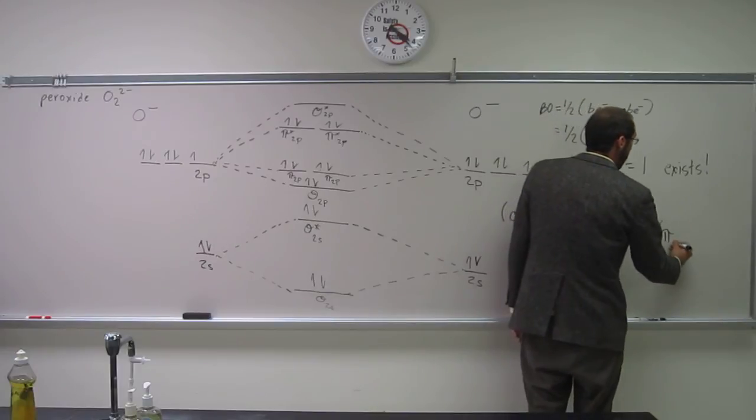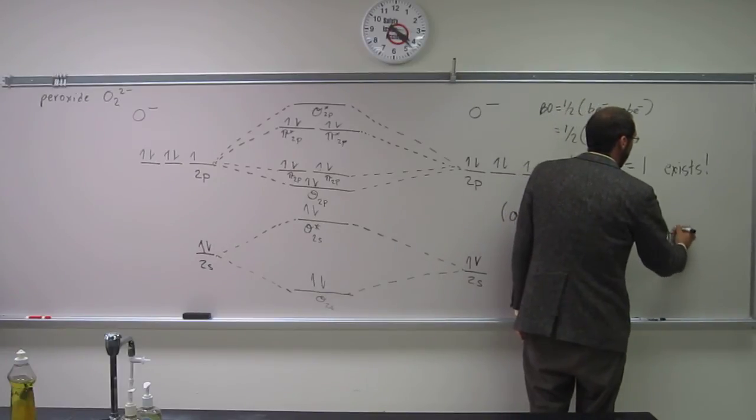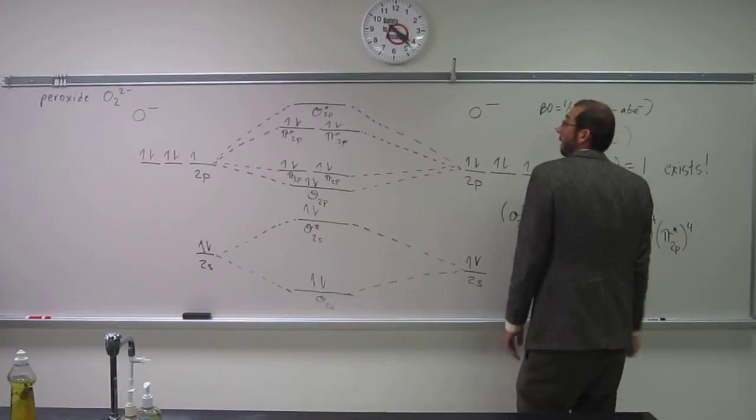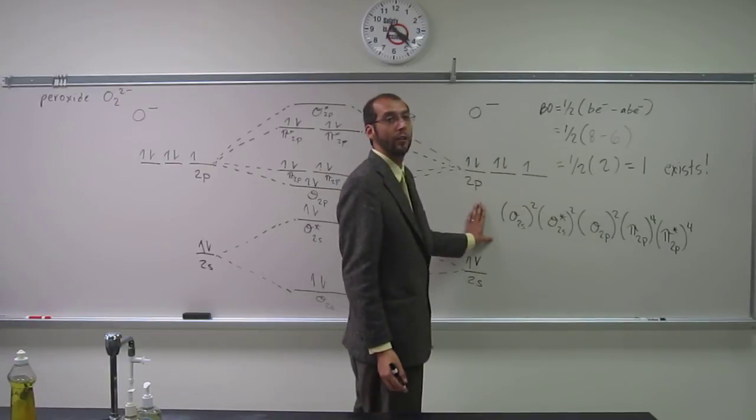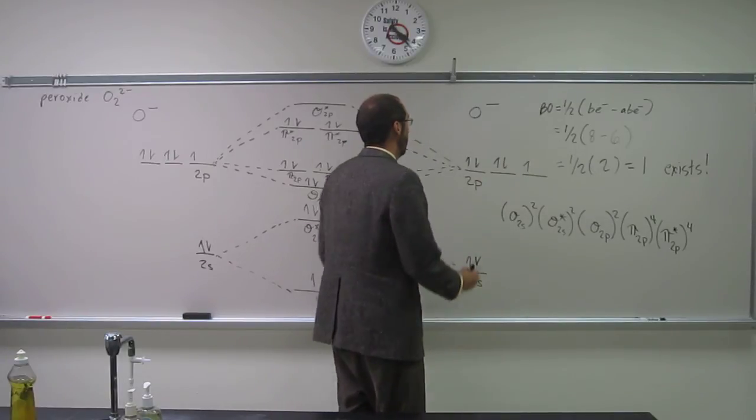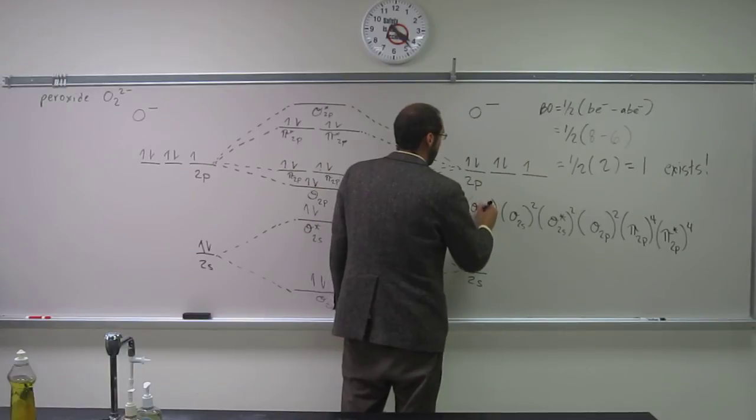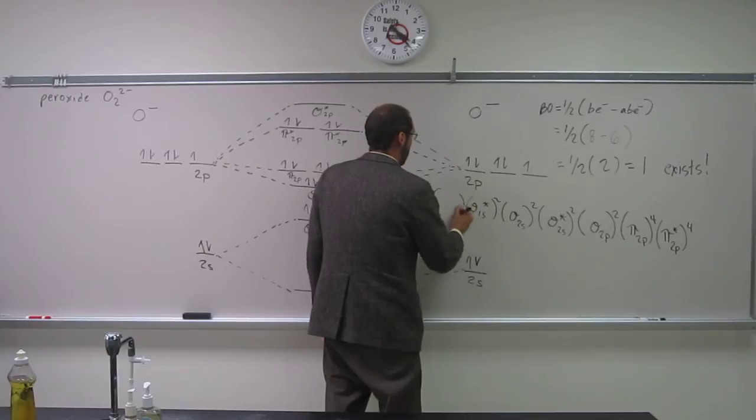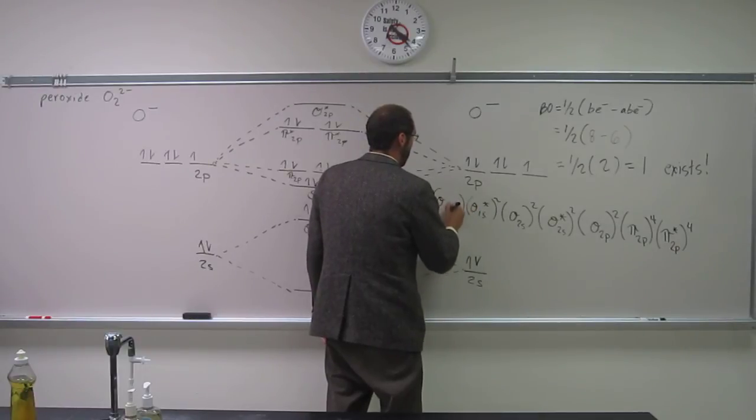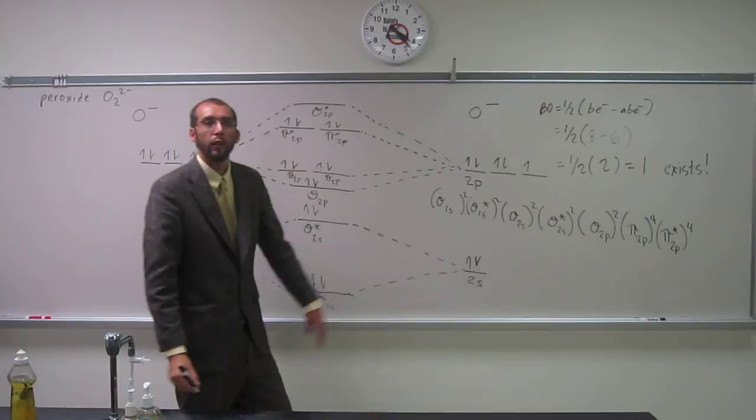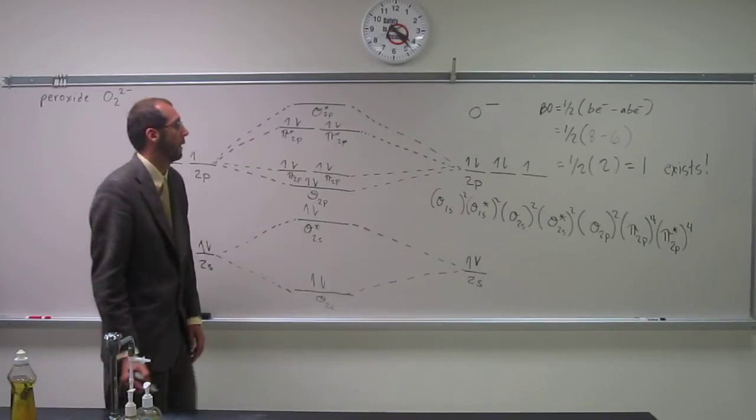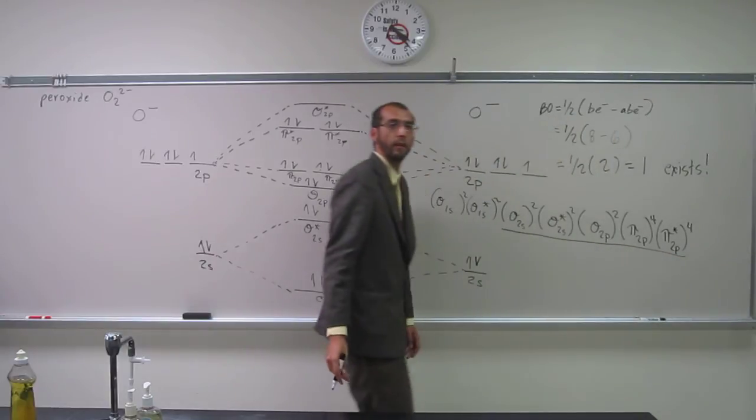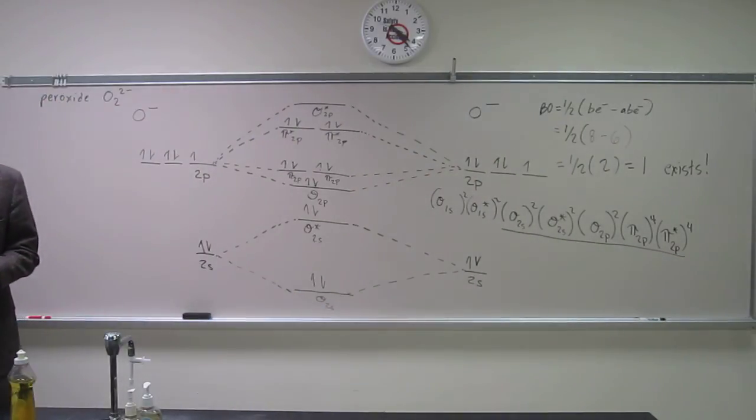If you guys aren't knowing this stuff, then you're going to have to know this, remember. So, this one is going to be pi star 2p 4, and is that it? That's it. That would be the valence electron configuration. If we wanted the full, we would just put sigma 1s squared sigma star 1s squared in front. Does that make sense?